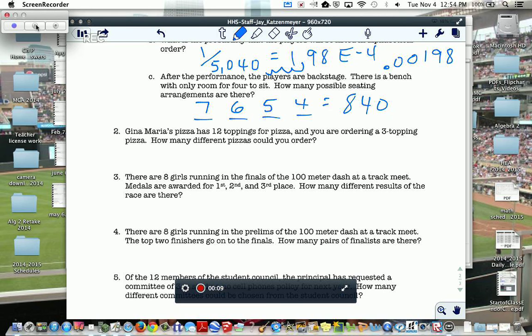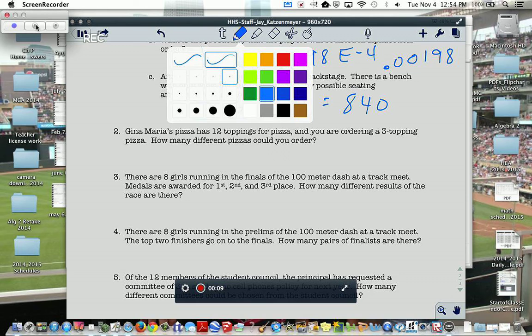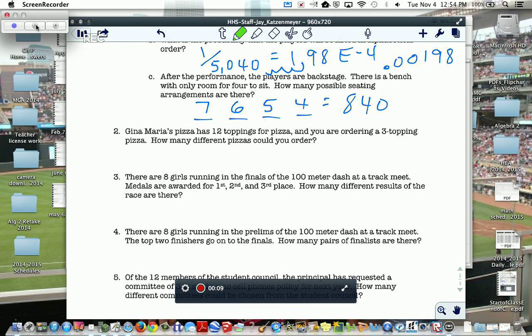Gina Maria's Pizza has 12 toppings for pizza. You are ordering three topping pizza. How many different ways can you order this? Well, again, if you call up and say, I want cheese, pepperoni, sausage, and somebody else calls and says they want sausage, pepperoni, and cheese, it's exactly the same thing.